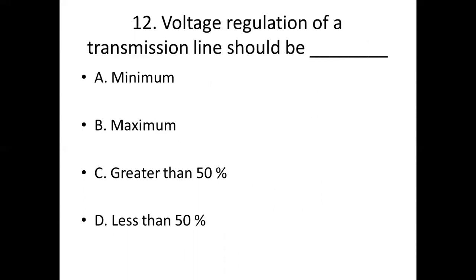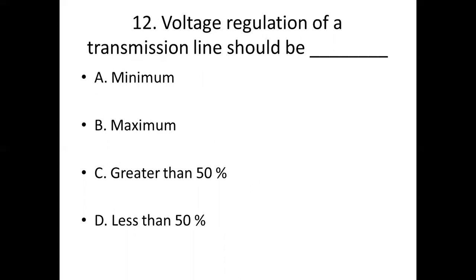Question 12: Voltage regulation of a transmission line should be? Option A: minimum. Option B: maximum. Option C: greater than 50%. Option D: less than 50%. Answer: Option A — minimum.